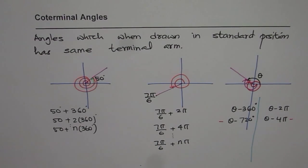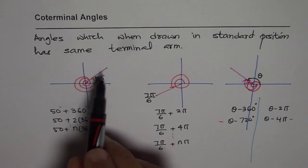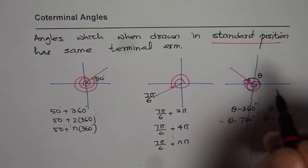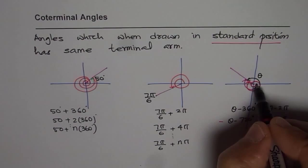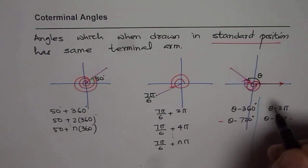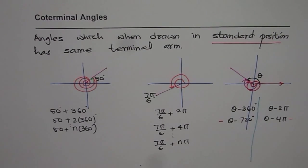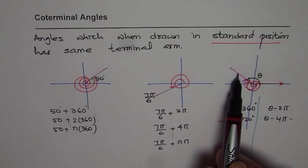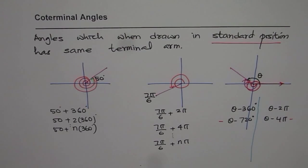In general, when you place an angle in standard position — meaning the initial arm is along the positive x-axis, the vertex is at the origin — and the terminal arms of two angles coincide, those angles are called co-terminal angles.